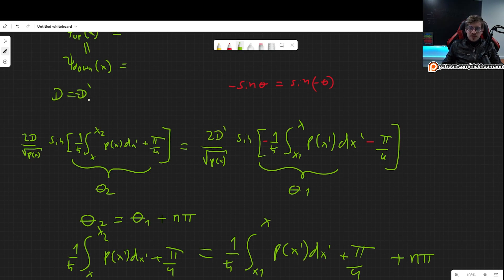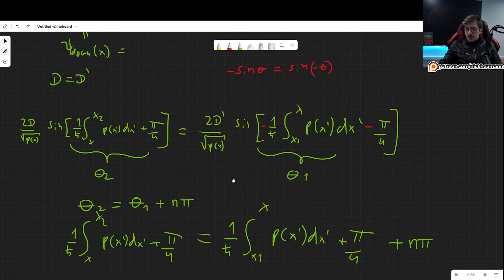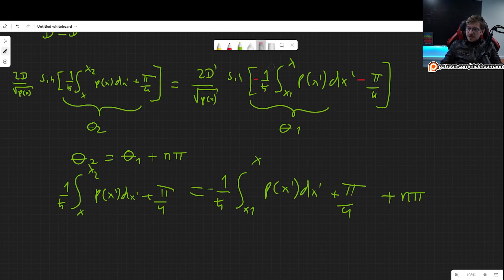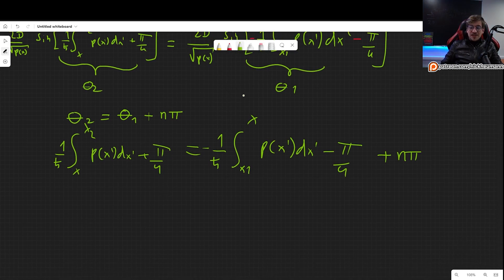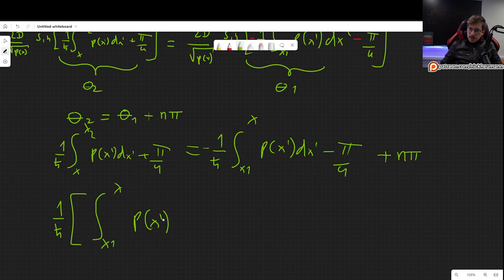Now we write down here minus this thing and minus pi over 4. Why is this so useful? Because now if we put the integrals together we get 1 over h-bar integral from x1 to x of the momentum x prime dx prime plus integral from x to x2 of the exact same thing. So what we can do is change the limits of the integral and go from x1 to x2 and we basically combined both of our integrals into just one integral which makes everything much much better.